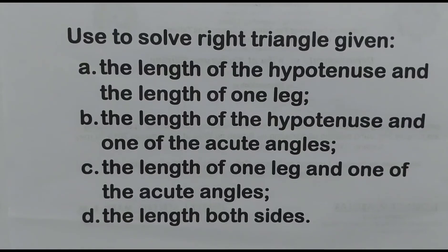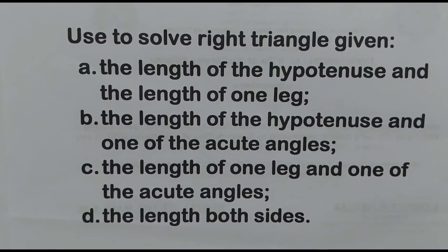Trigonometric ratios are used to solve right triangles given four conditions: Letter A — the length of the hypotenuse and the length of one leg are known. Letter B — the length of the hypotenuse and one of the acute angles. Letter C — the length of one leg and one of the acute angles. And Letter D — the length of both sides.